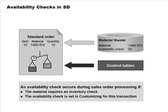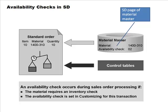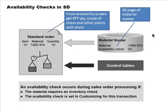An availability check occurs if the material requires an inventory check or if the availability check is set in customizing for the transaction. The availability check code is set in the Sales and Distribution page of the material master. From the ATP screen you can see the available-to-promise quantity, the scope of the check, and which other plants have stock of the material.